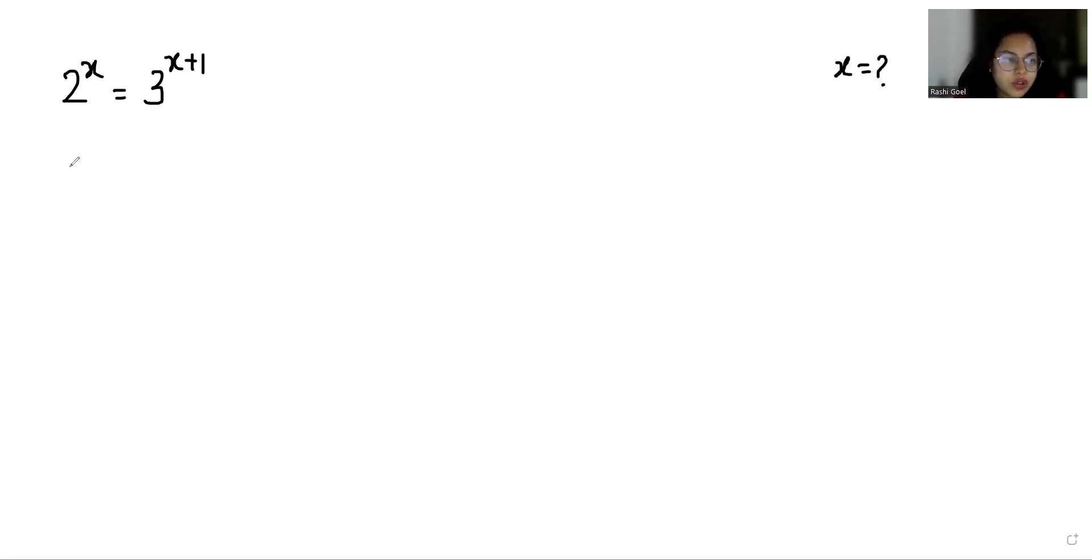So let's start with today's video solution. 2 power x equals, according to exponent rule x power n plus m, we can write it as x power n times x power m, so 3 power x times 3 power 1.